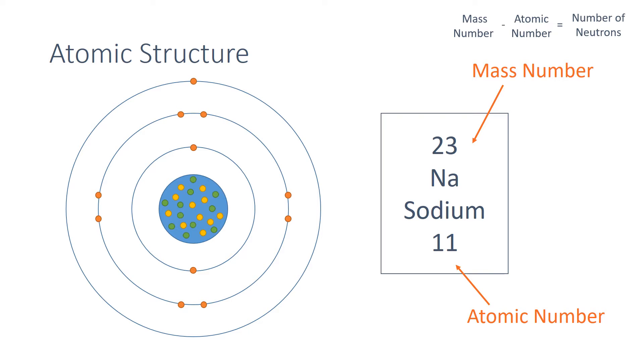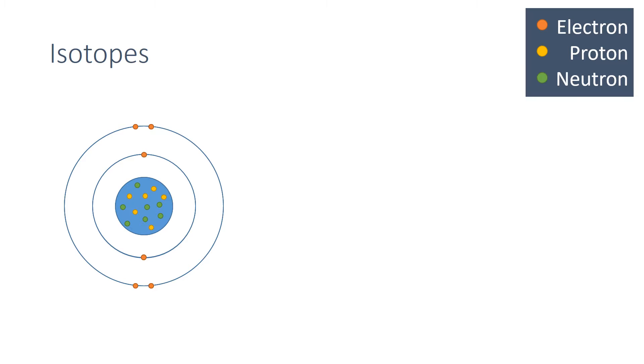Though the number of protons in a particular element cannot change, you can change the number of neutrons and electrons. Changing the number of neutrons makes an isotope.